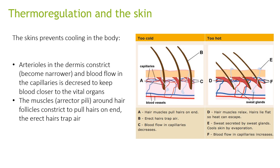The skin also prevents cooling of the body. Arterioles in the dermis constrict to become narrower and blood flow in the capillaries is decreased to keep blood closer to the vital organs. The muscles around the hair follicles constrict to pull hairs on end, so the net of hairs traps air and retains heat.